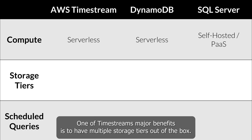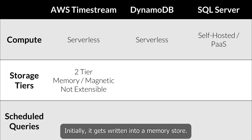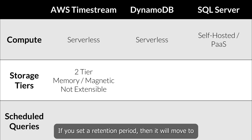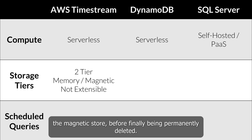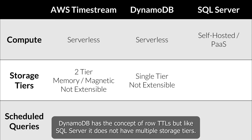One of Timestream's major benefits is having multiple storage tiers out of the box. Initially, data gets written into memory, and if you set a retention period, it will move to a magnetic store. You can also set retention on the magnetic store so the data is permanently deleted. DynamoDB has the concept of TTLs, but like SQL Server, it does not have multiple storage tiers.